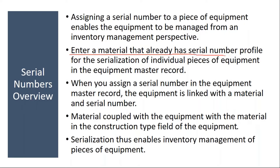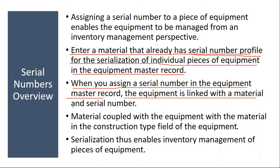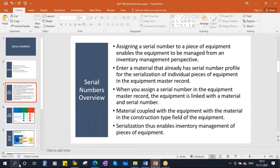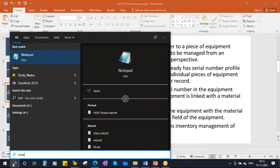Enter a material that already has a serial number profile for the serialization of individual pieces of equipment in the equipment master - I will show this in the system. How to assign the serial number profile to the equipment and to the serialization process, I will show you. When you assign a serial number in the equipment master record, the equipment is linked with a material and serial. So basically, we have the equipment master - this we already covered. When you assign this serial number to the equipment, automatically this equipment will be linked with a material. Here you have a unique combination.